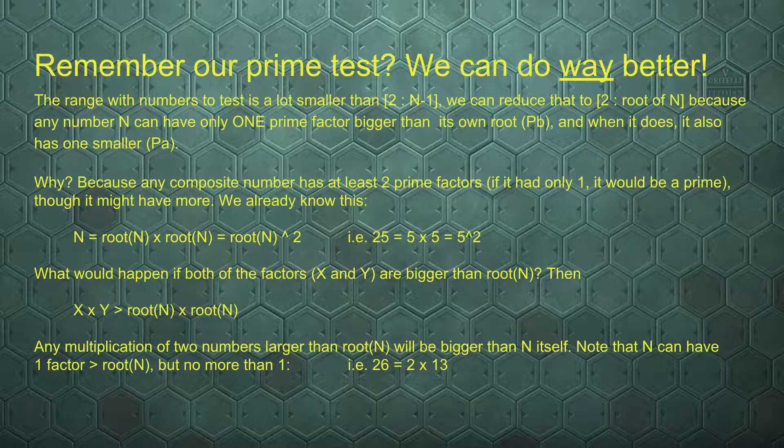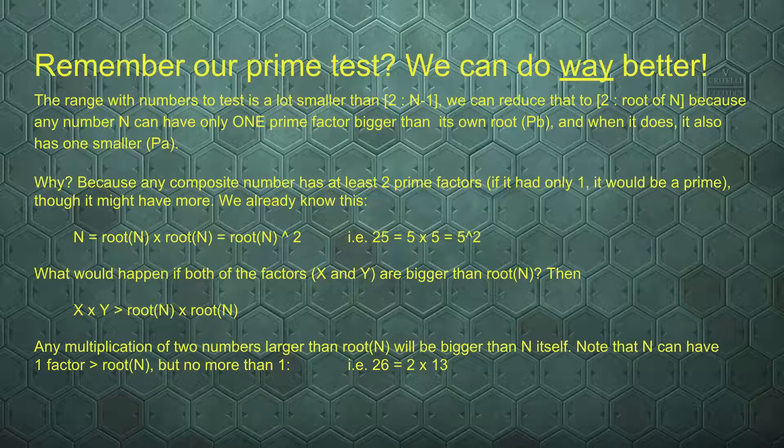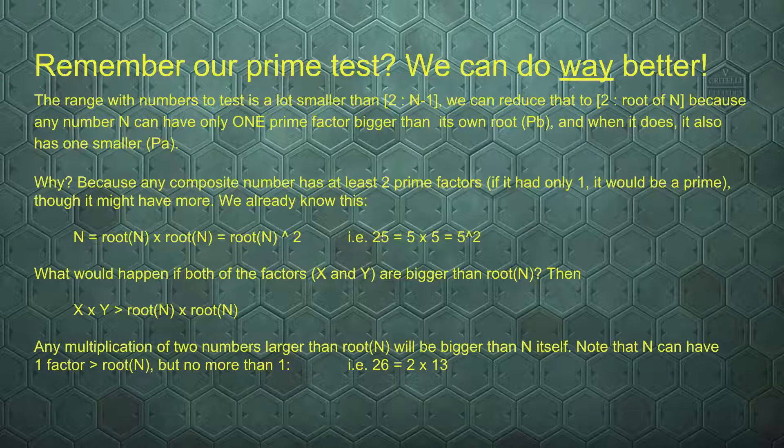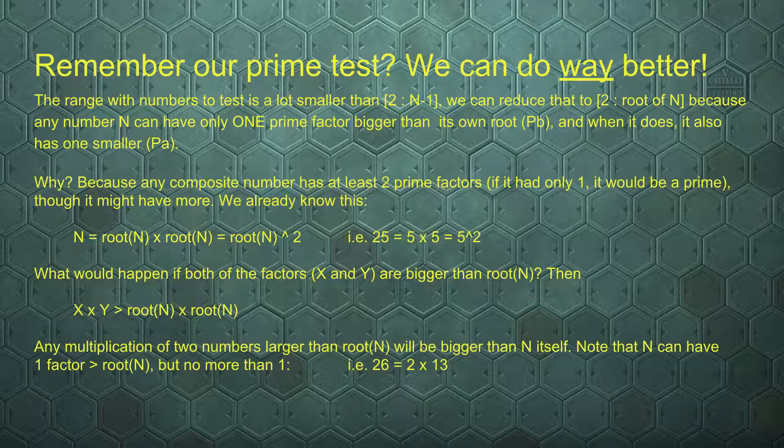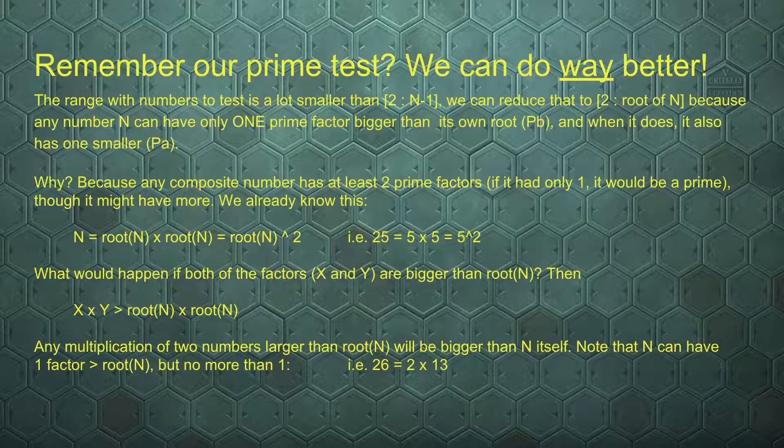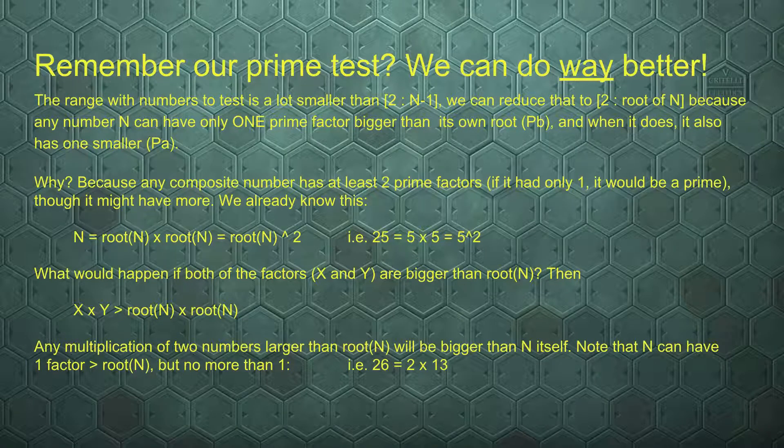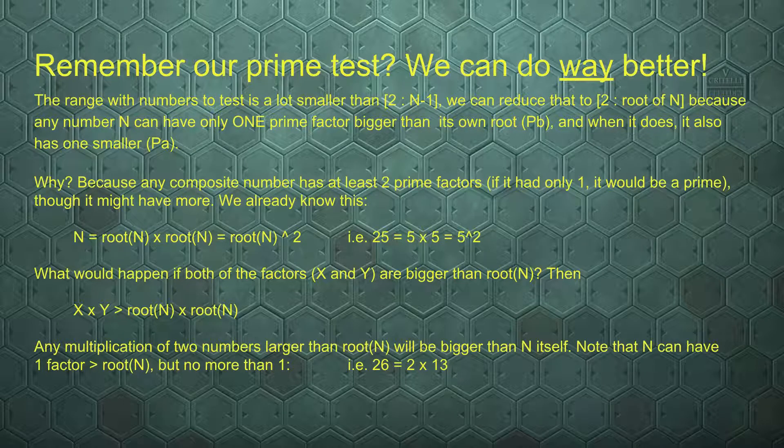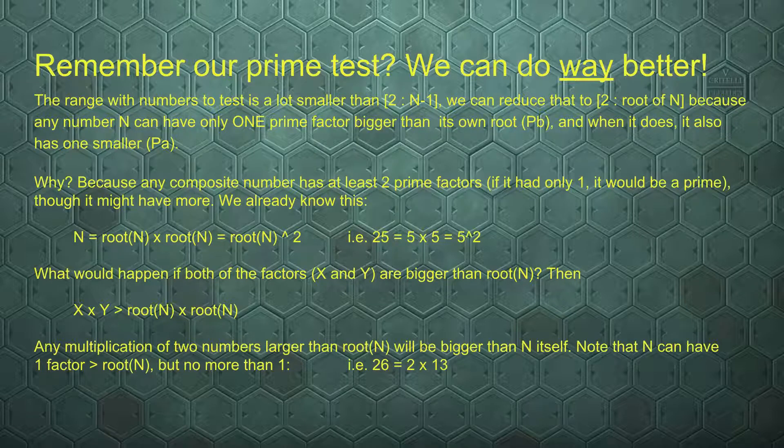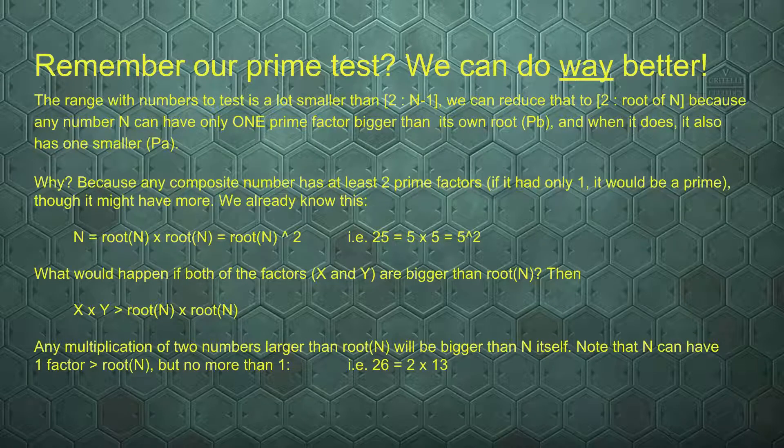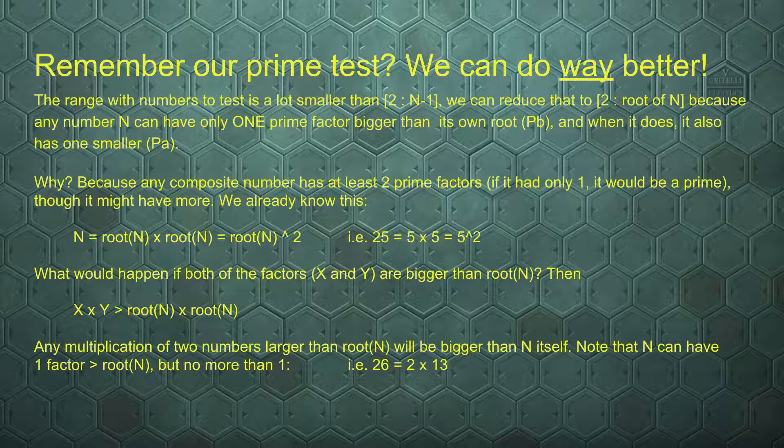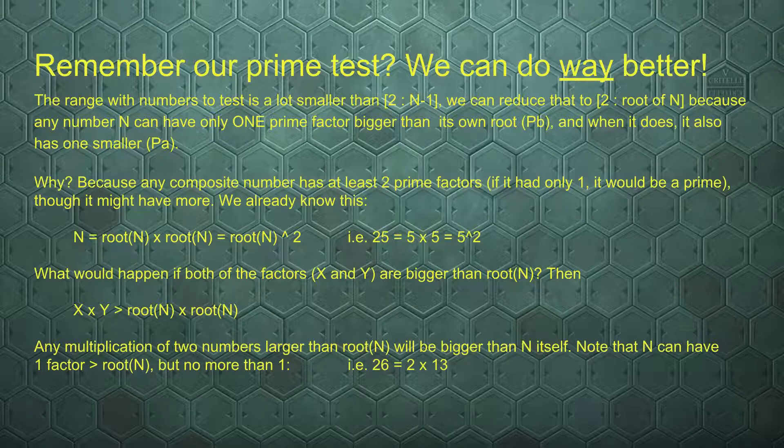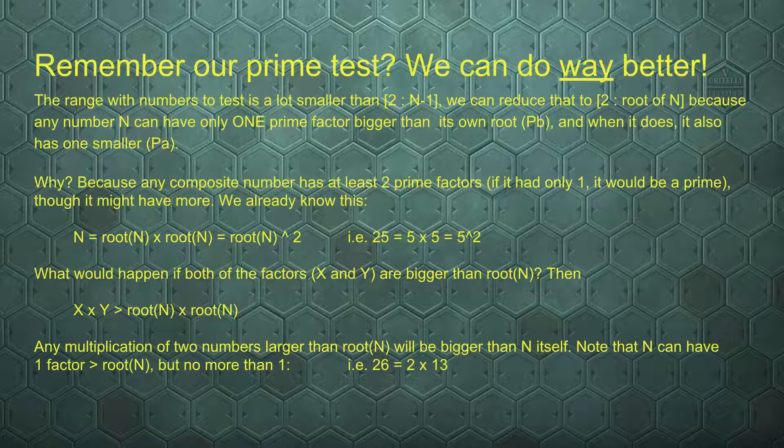So 26 for example is a number that has a prime factor bigger than its root. The root here is 5 point a little bit. And it has 13 as a prime factor, but it also has a smaller prime factor. So if we test for primality, we know that 26 is not a prime, because when we look at all the numbers between 1 and the root of 26, we will find 2. We will find a number smaller than the root that is a prime factor.